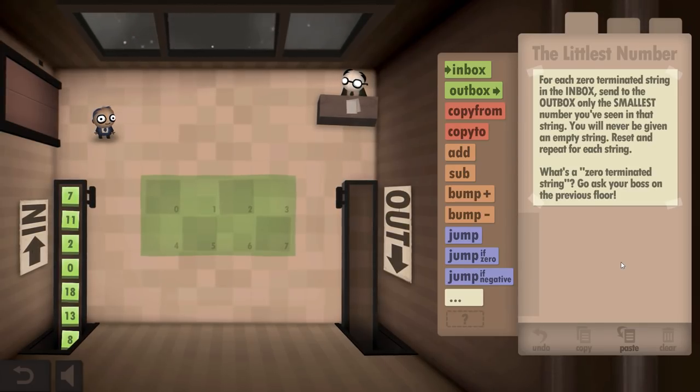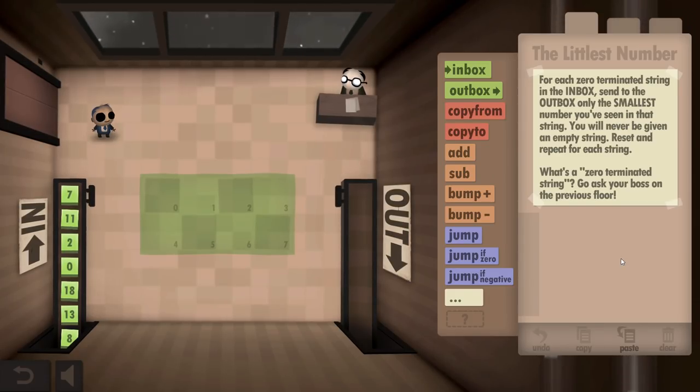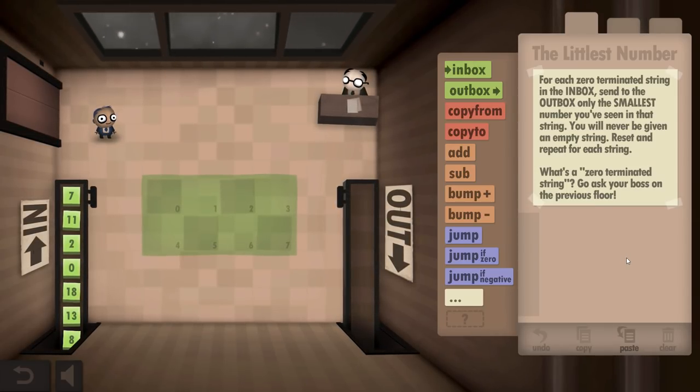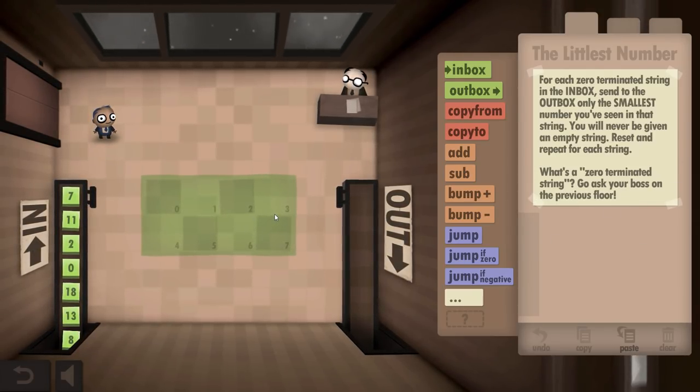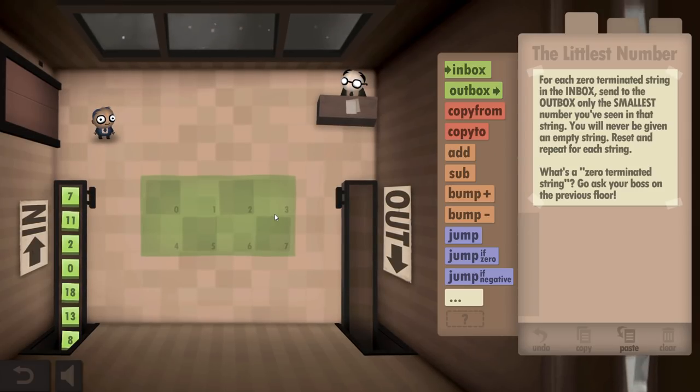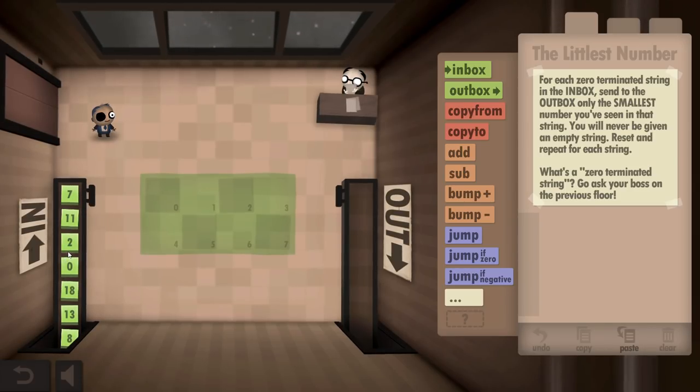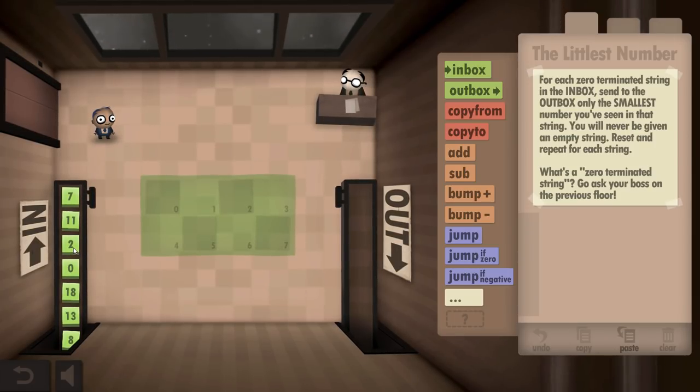For each zero terminated string in the inbox, send to the outbox only the smallest number you've seen in that string. You will never be given an empty string. Reset and repeat after for each string. What's a zero terminated string? Go ask about- Yeah, on the previous floor. How'd you get here is the real question? Okay, this one sounds less hard. Basically, I'm just going to keep grabbing a number over and over again, and I'm going to check it against the previous number to see which one's bigger, and then hold on to the smallest one. And then when I hit a zero, I'll turn in what I'm holding. That sounds easy enough.